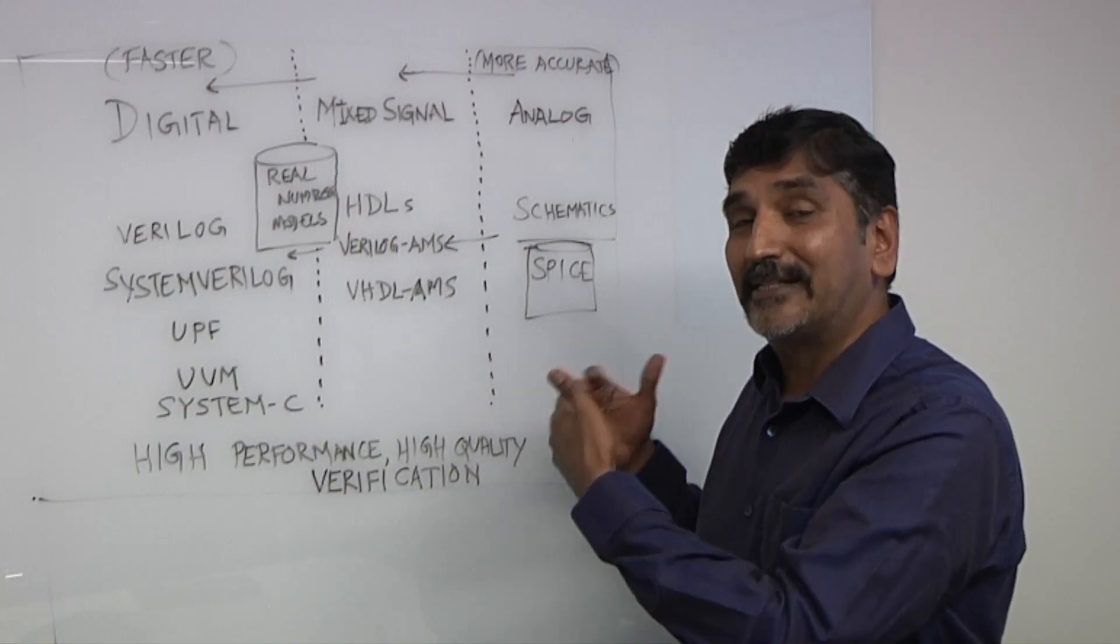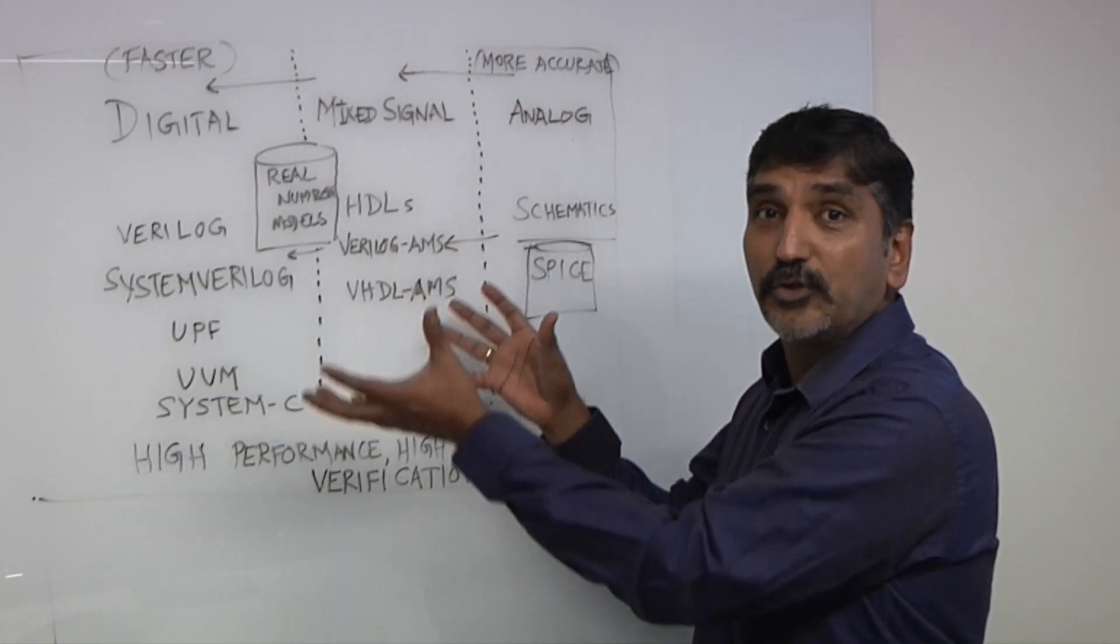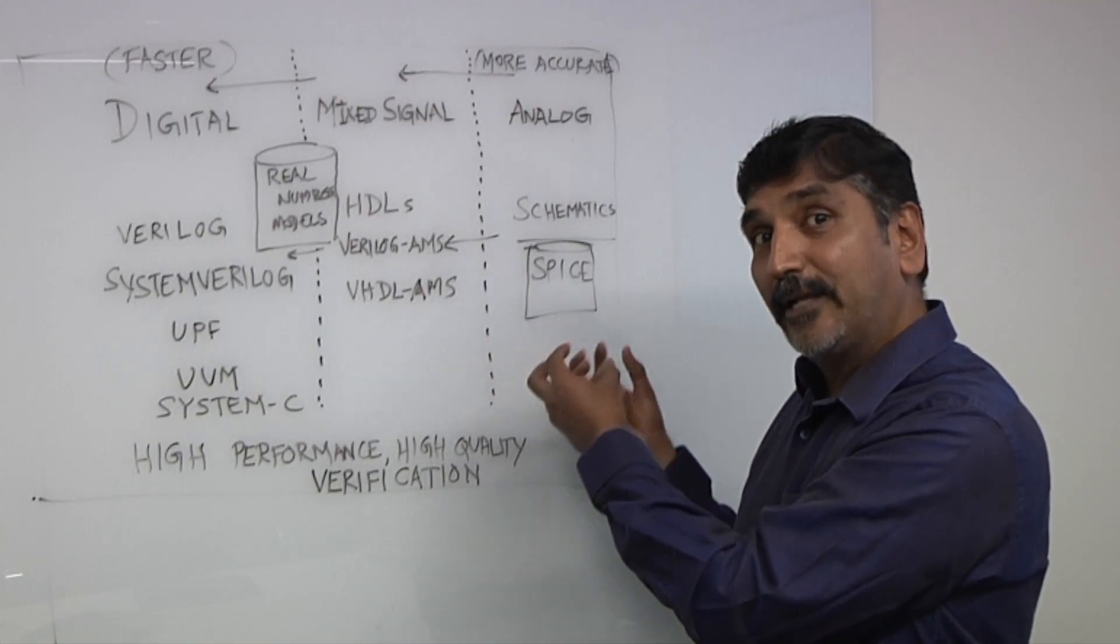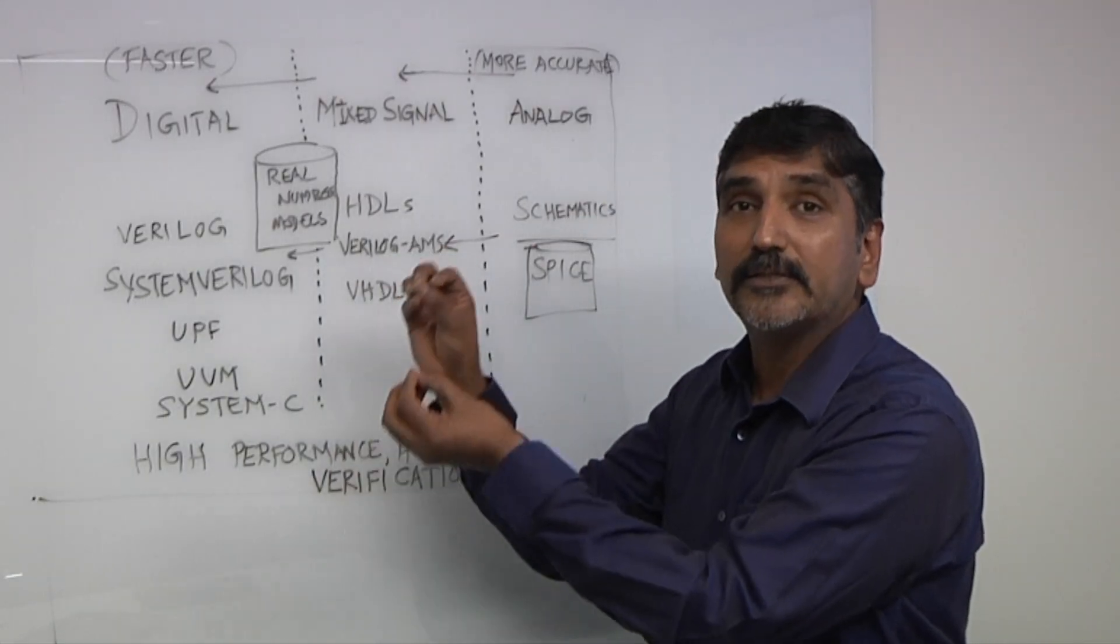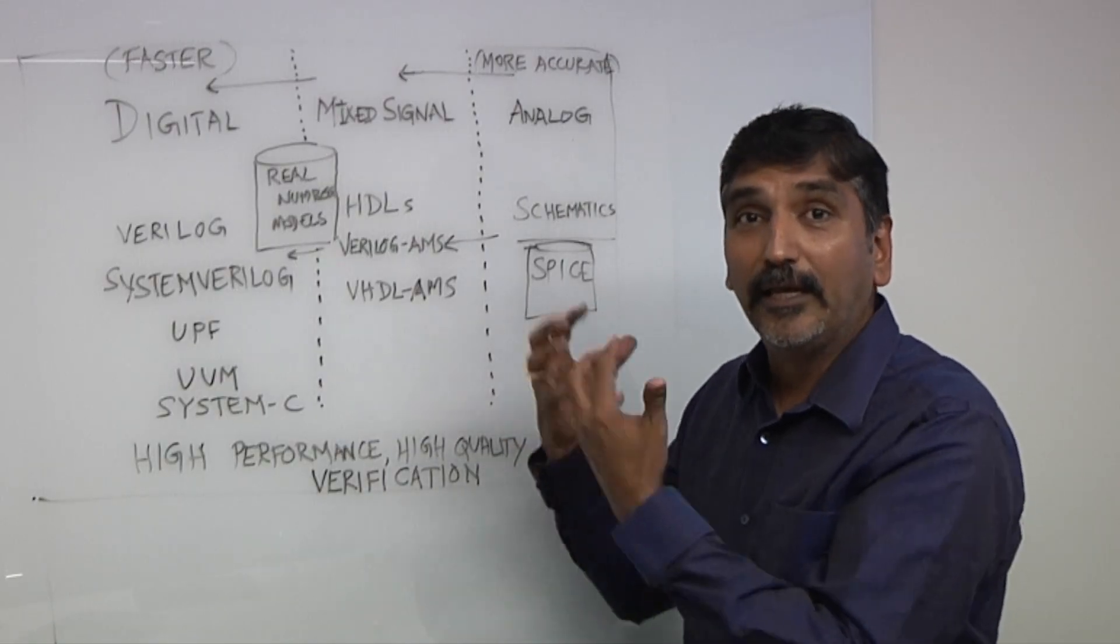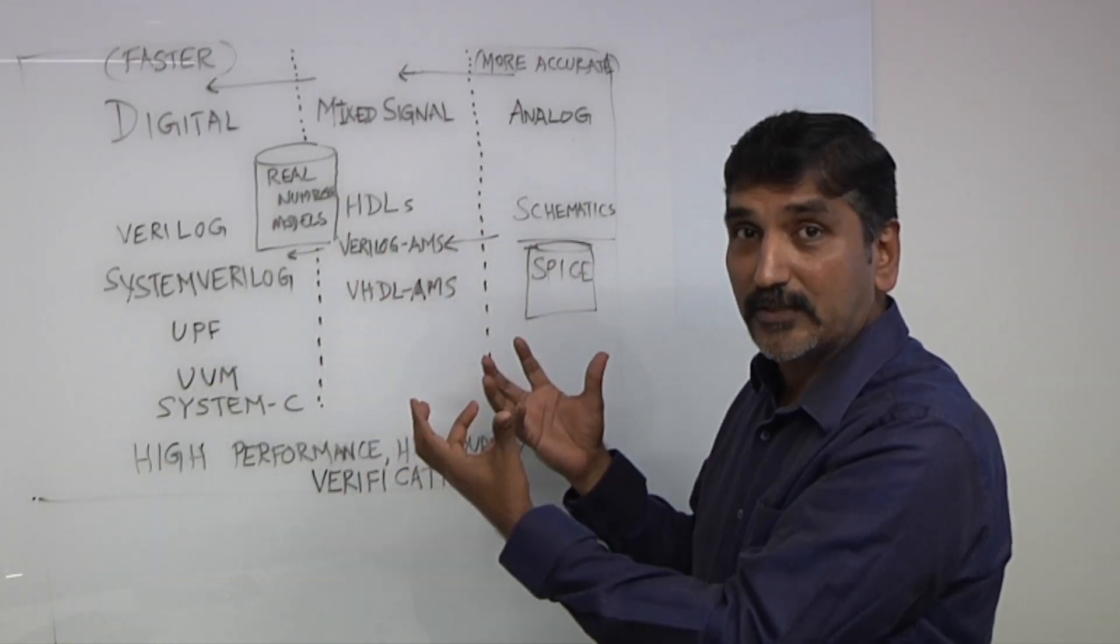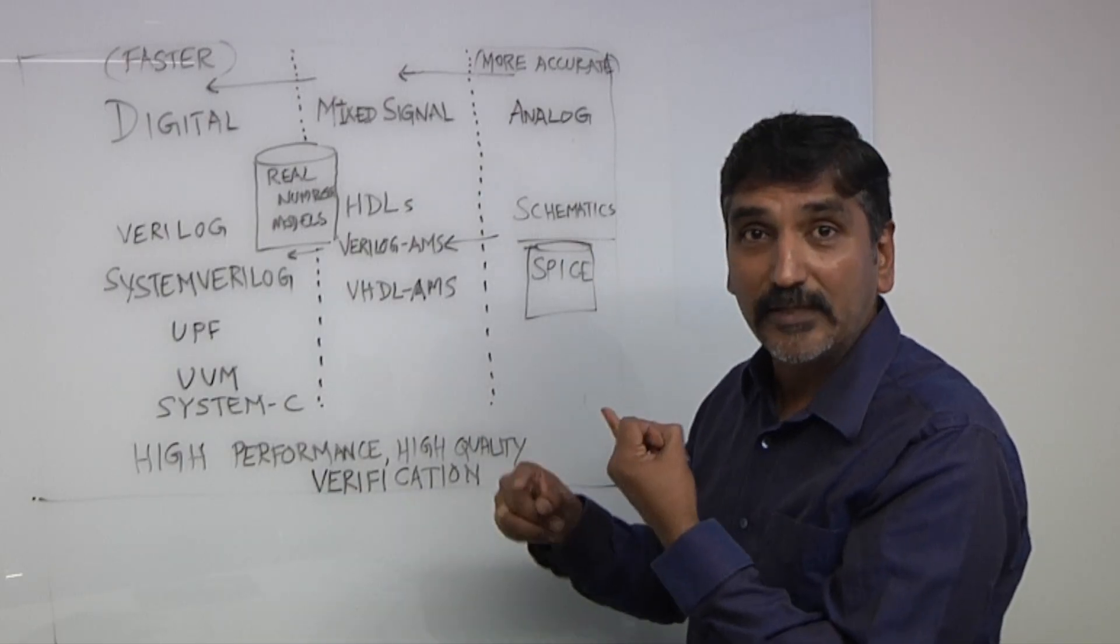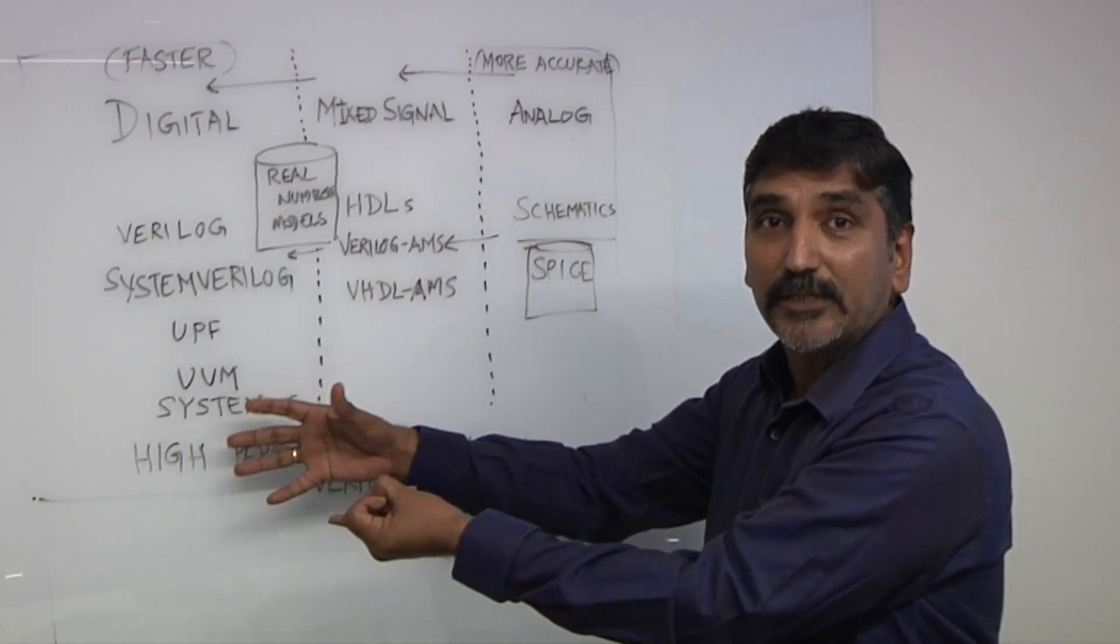But what has happened as a trend is there's this new concept called real number modeling, which can be used to take your analog blocks and actually run them at digital simulation speeds. And when you have this new ingredient in your sauce, you want to be able to use it very effectively.